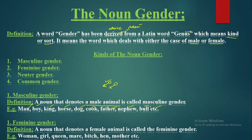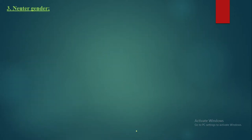Next we have feminine gender. A noun that denotes a female animal is known as feminine gender. Examples include: woman, girl, queen, mayor, bitch, mother, etc. Those nouns which denote a female animal are known as the feminine gender.